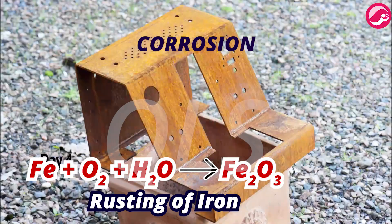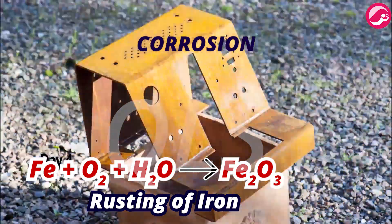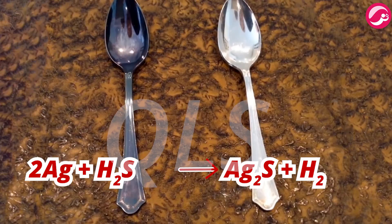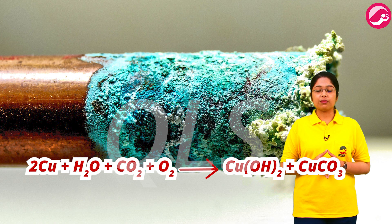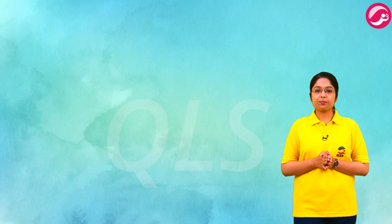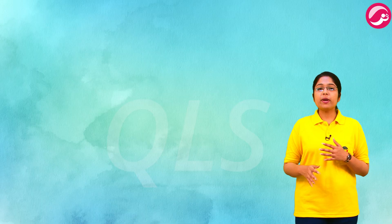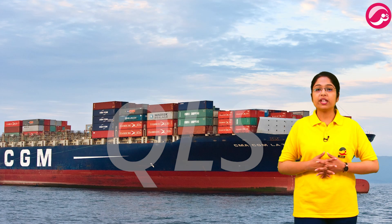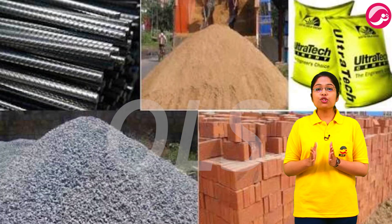Many other metals like silver and copper also corrode when they come into contact with moisture, acids, or other agents. Silver becomes blackish in color when exposed to air — it reacts with sulfur present in the air to form silver sulfide. Copper gets a green deposition when exposed to moisture; this green deposit is a mixture of copper hydroxide and copper carbonate.